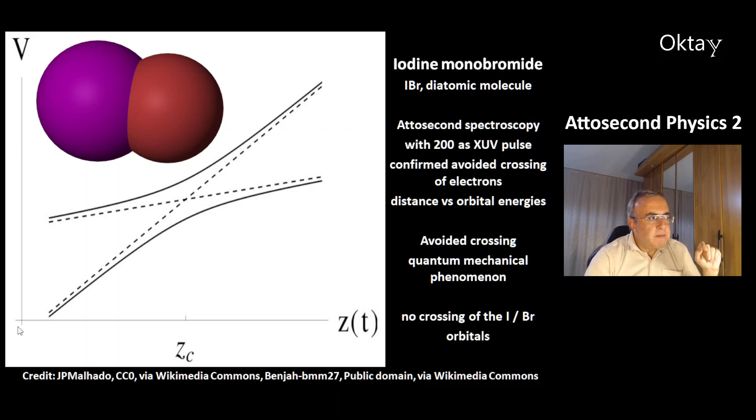In this picture, x-axis is distance, y-axis is orbital energies. Avoided crossing is a phenomenon of quantum mechanics. And it says there is no crossing of the orbitals of the iodine and the bromine.